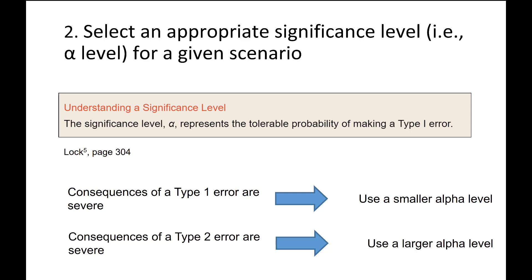You see a higher alpha level in a lot of pilot studies — smaller studies done earlier when researchers are planning a larger study. Pilot studies are used to inform research design and to get preliminary data, but they're not usually used to make decisions, so the consequences of a type 1 error are very low stakes.